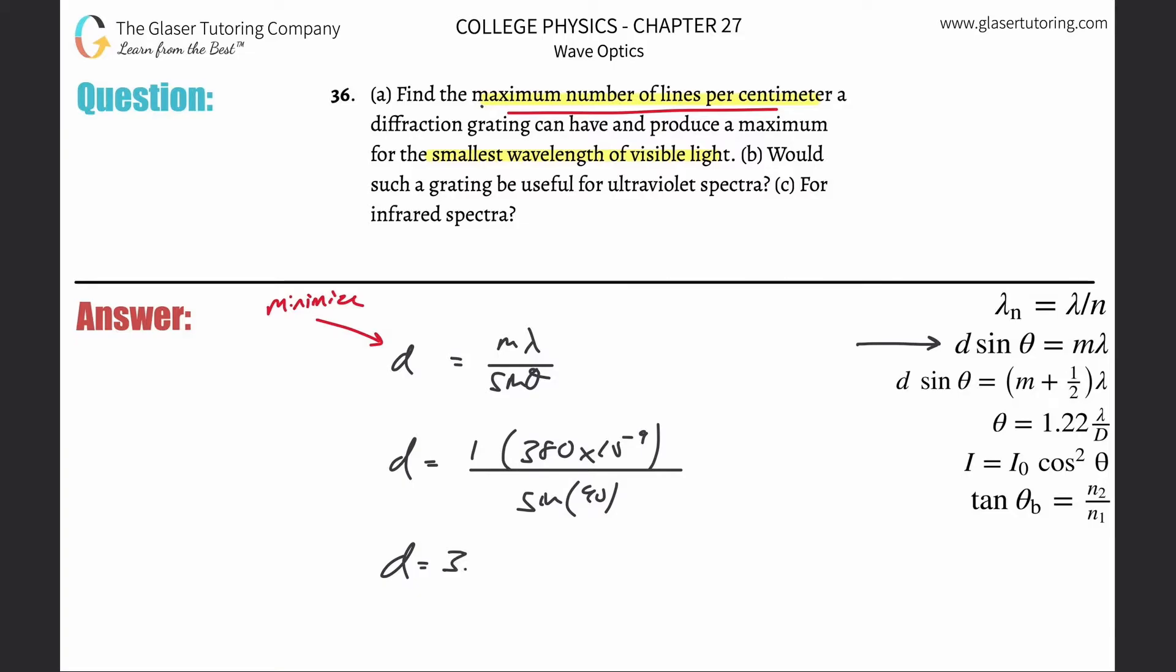Now this is basically the number of meters per line, but what they want us to now find is the number of lines per meter per centimeter. So flip this around now—you're going to get for every one line there are 3.80 times 10 to the minus seven meters.